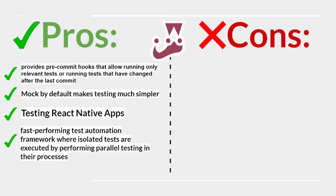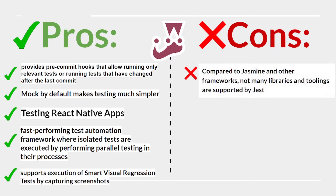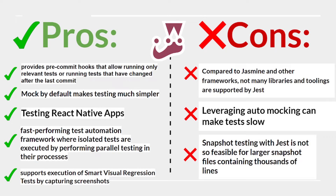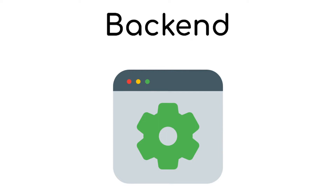Jest also supports smart visual regression tests by capturing screenshots. Cons: compared to Jasmine and other frameworks, fewer libraries and tooling are supported; leveraging automocking can make tests slow; and snapshot testing with Jest is less feasible for larger snapshot files containing thousands of lines. Run the appropriate commands in Node.js to use Jest.